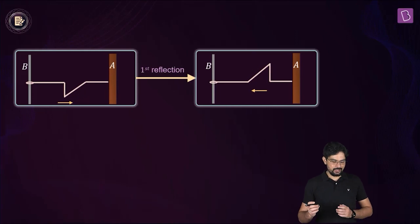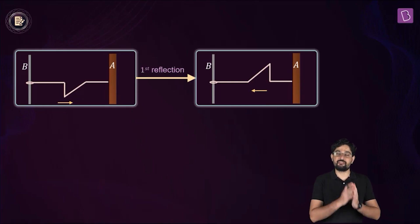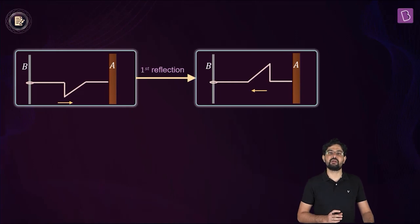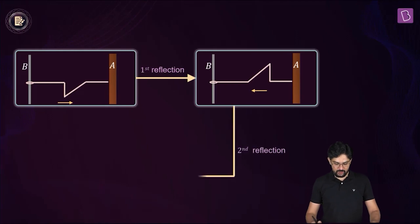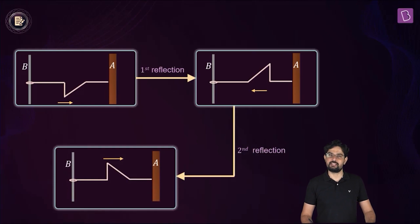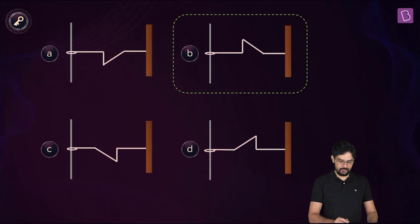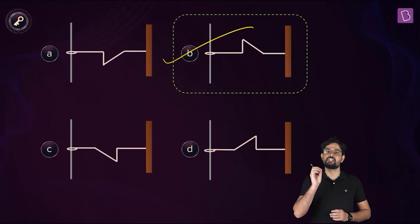And now after the second reflection from the free end, the wave pulse would be moving towards right. And there will be no phase difference between the reflected wave pulse by the free end B and the incident wave pulse. So after the second reflection, the wave pulse is going to look like this. So we have our answer in this case, you can see that the wave pulse shown in option B will be the right shape of the reflected wave pulse.